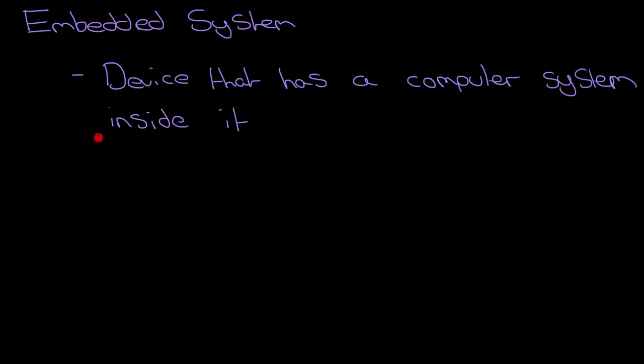it's a device that has a computer system inside it. So far, so good. That's a fairly straightforward definition. But when you start looking around your house, you start to question, well, does it have a full-on computer system inside it? Or is it something else? So let's give you some examples of some definite embedded systems that you'll have around your home.